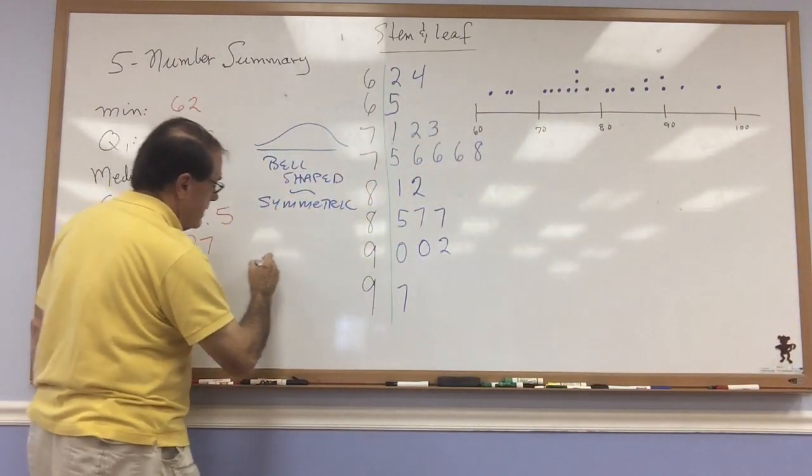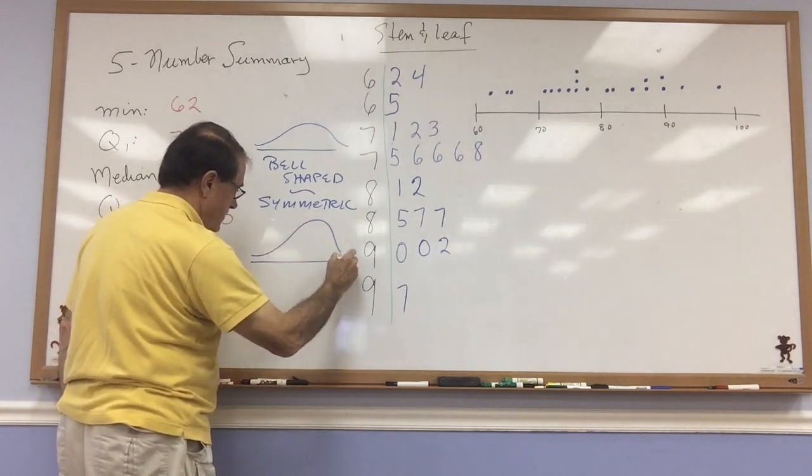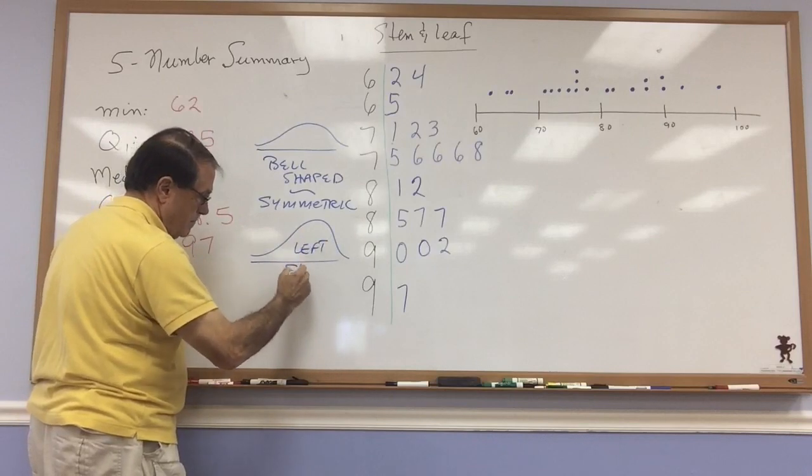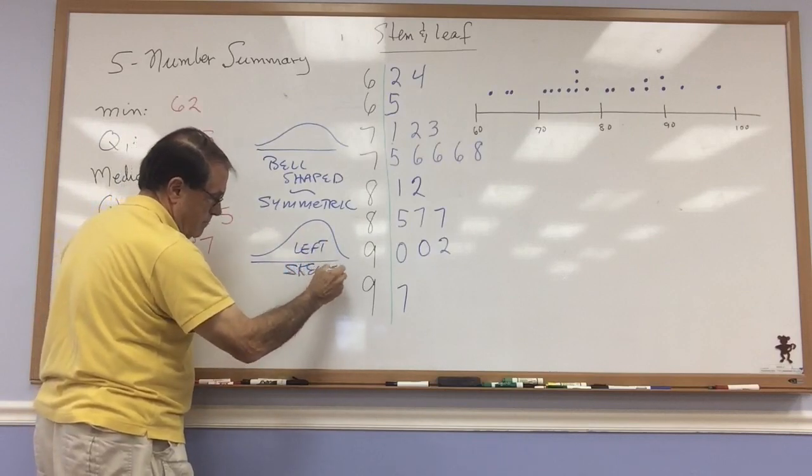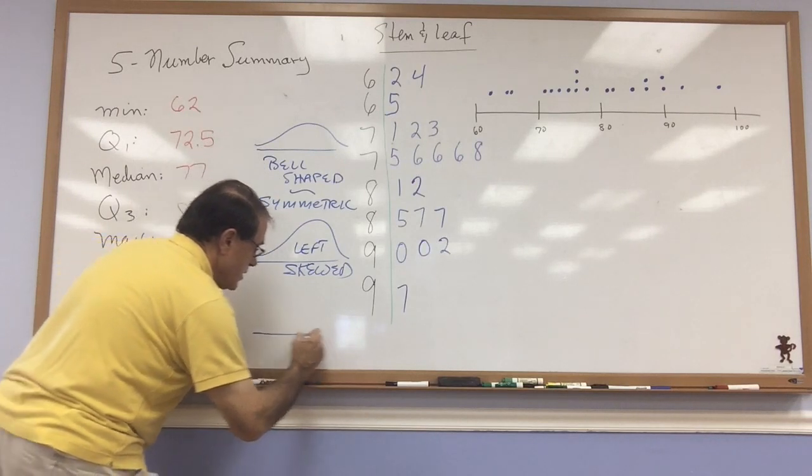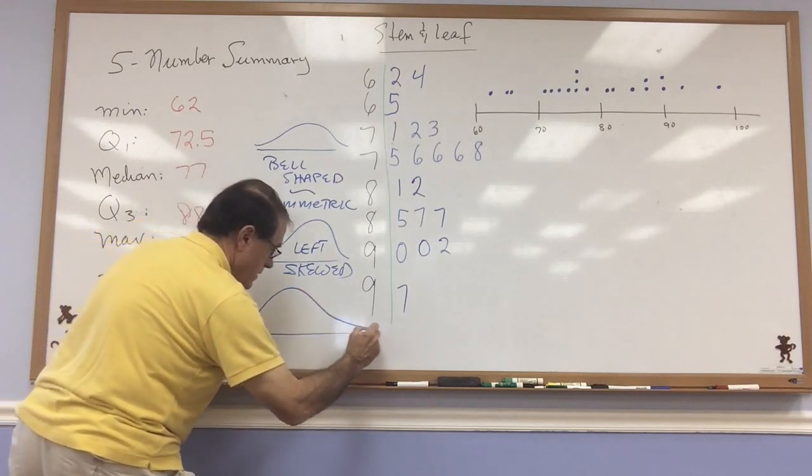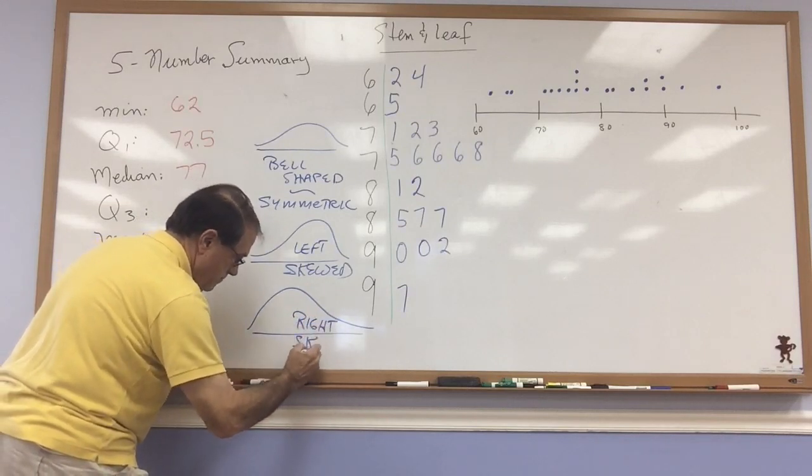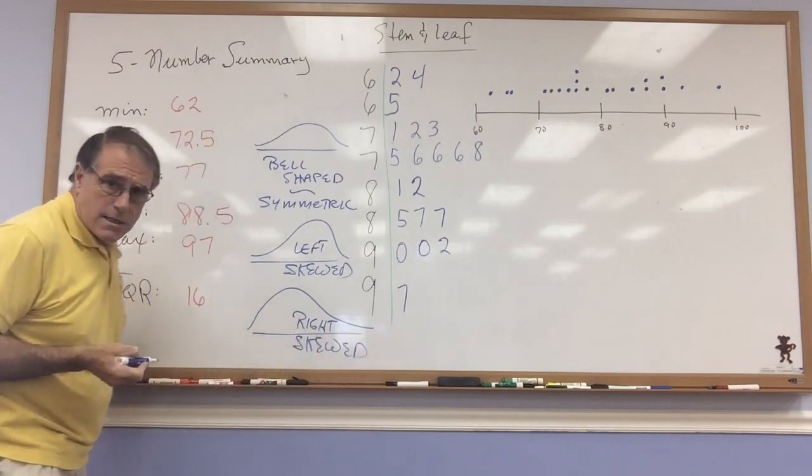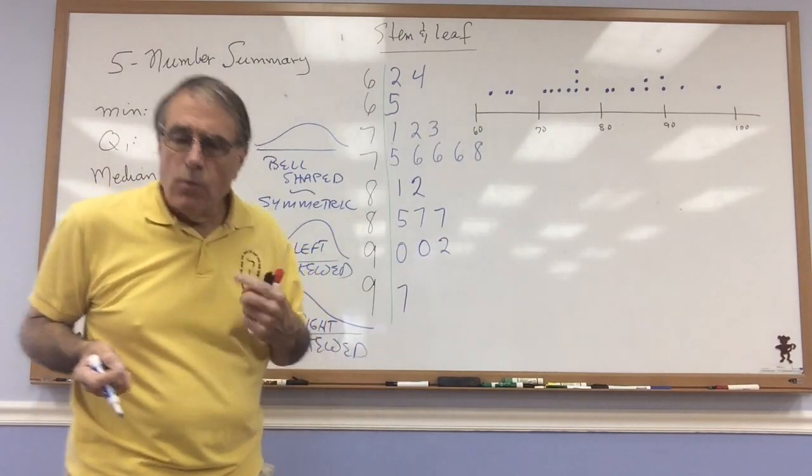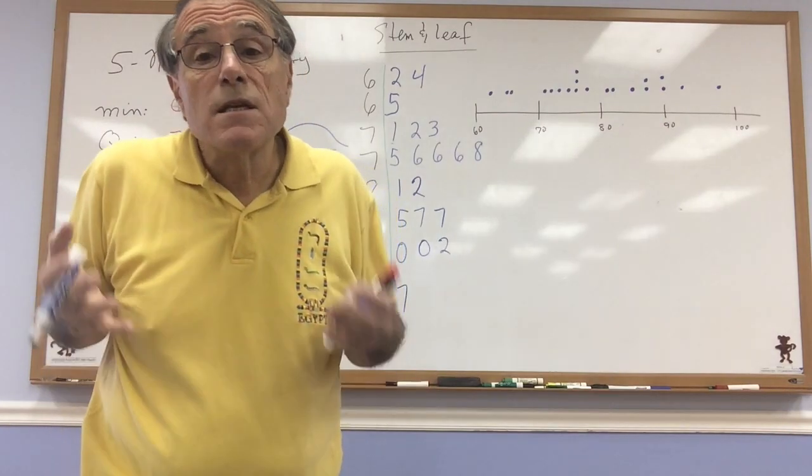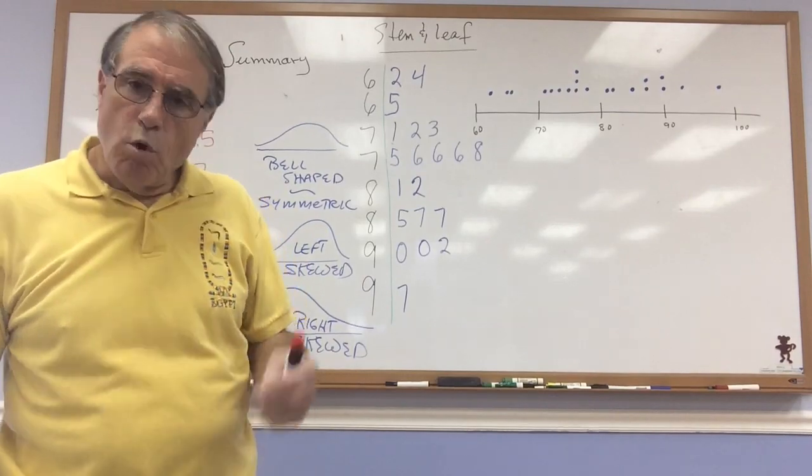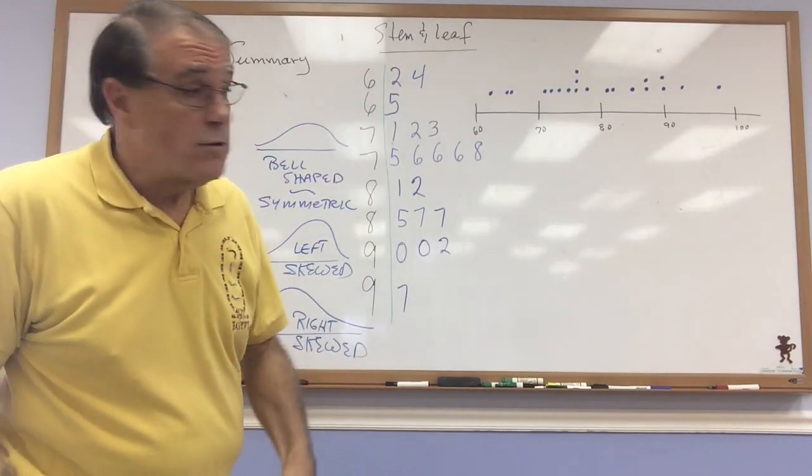And left skewed would have this kind of shape to it. This would be left skewed versus right skewed that would have this sort of shape to it. And this would be right skewed. So my guess is that the data we have here is left skewed. Which simply means there are some scores at the left pulling things down. More on how we would determine that in a future video.